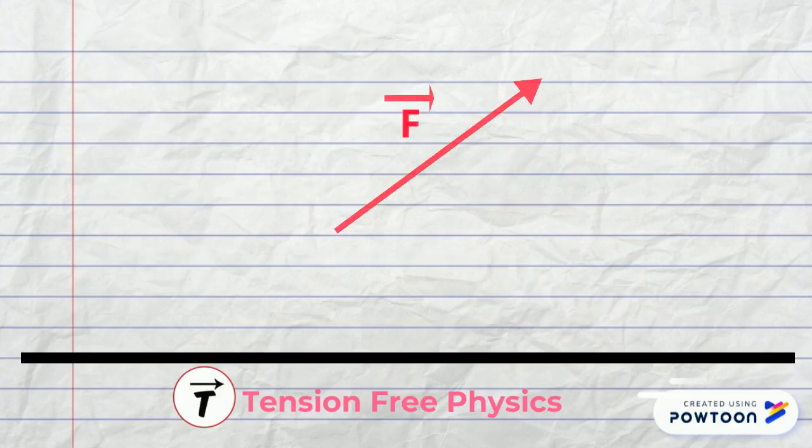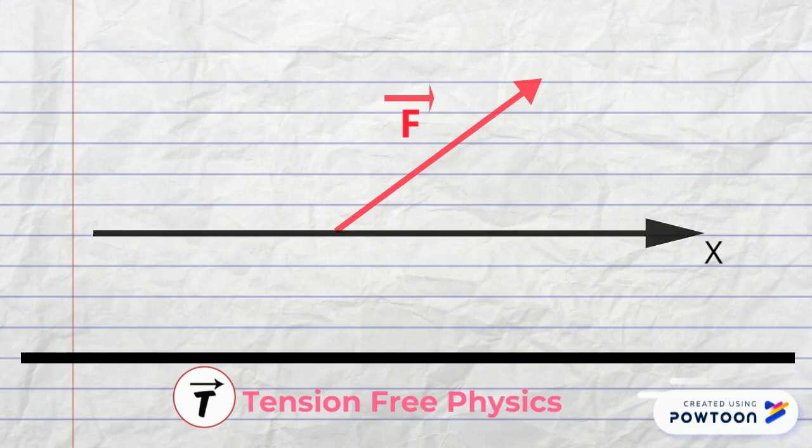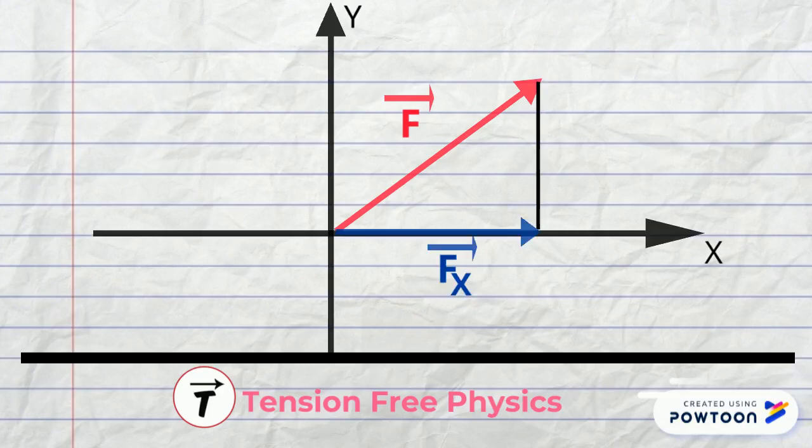Consider the force vector f. We want to find the horizontal and the vertical components of f. We draw the x-axis and the y-axis. The projection of f on the x-axis is called fx and the projection of f on the y-axis is fy.